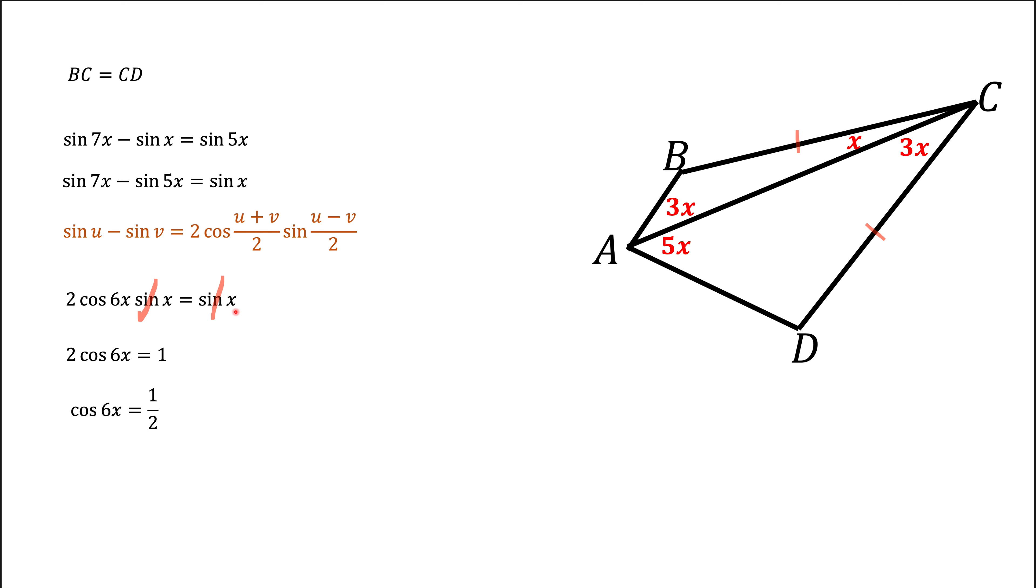Now what we need to do is figure out what 6x is. If it was a simple trigonometric equation, we would get infinite number of solutions. But this is a geometric problem, so 6x lays in a certain range. Because of that, there is a limited number of solutions we can have.